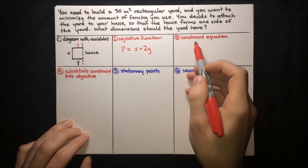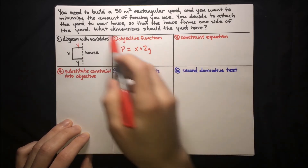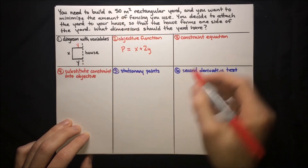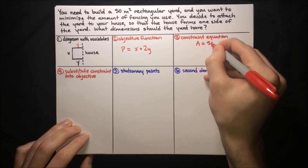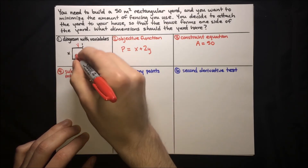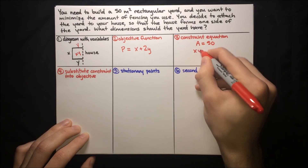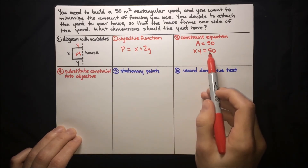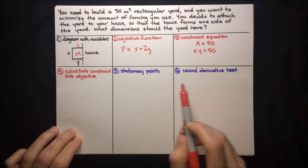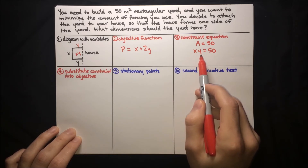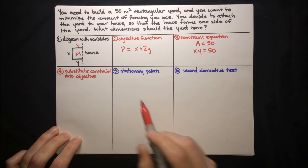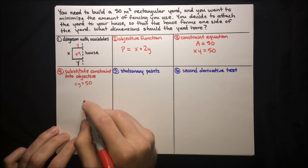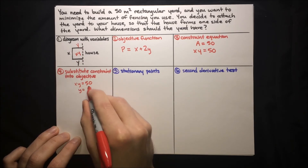Now what is our constraint? Our limitation is that we need to build a 50 square meter yard — the area of the yard has to be 50 square meters. So let's write: area equals 50, and express area in terms of x and y. The area is still just x times y, so x times y equals 50. Now it's time to combine our objective function and constraint equation into a single function. We solve the constraint for one variable: divide both sides by x to get y equals 50 over x.